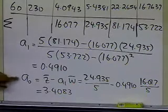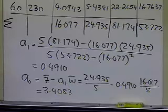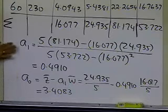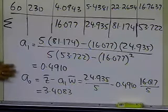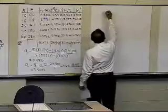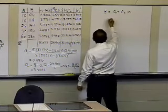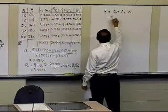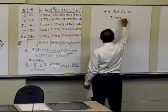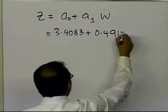These are the constants of the model of z versus w. We need to find out what the constants of the actual power model are. We have z equals a_0 plus a_1 w. a_0 we just found to be 3.4083, a_1 we just found to be 0.4910 w.